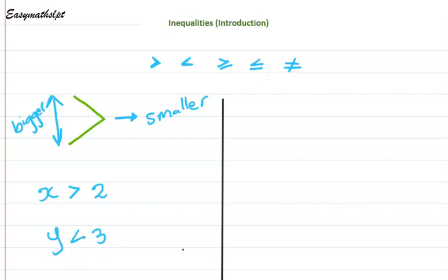Now, what if we had r and we had this sign — let's say 4? This means r is bigger, or it can be equal to 4. So it means 4 is included. And if we had p less than or equal to 3, so p is less than or equal to 3.